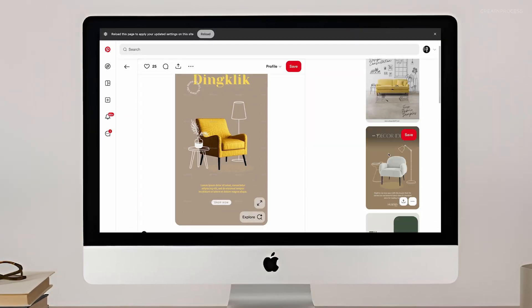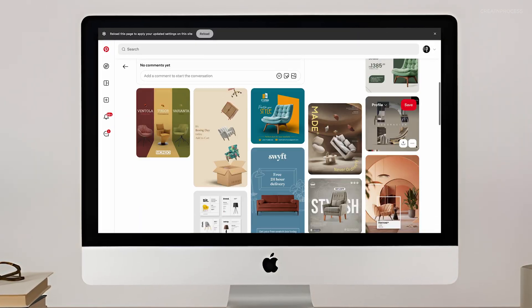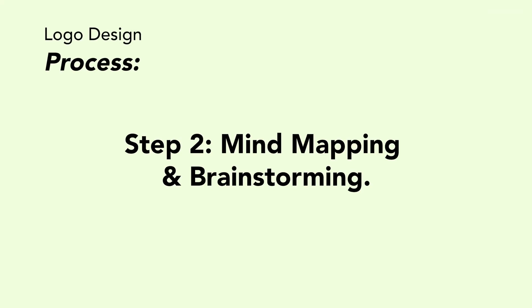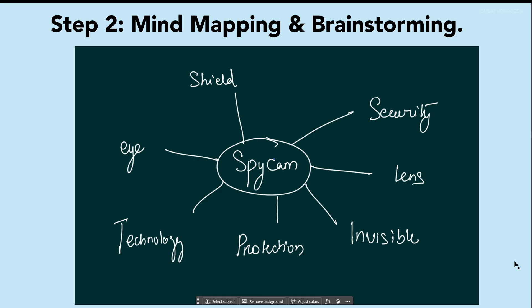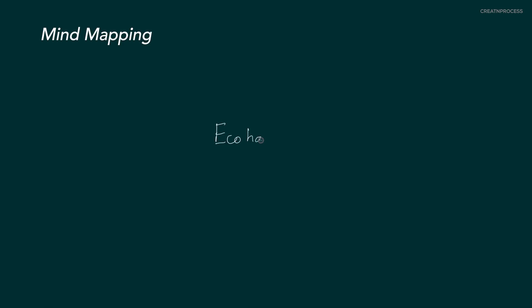Once you understand the brief and have done your research, the next step is mind mapping and brainstorming — now we start generating ideas. Take the keywords from your brief. Let's say the client is Eco Heaven. In the center of the page, write it down and radiate out every related word you can think of.